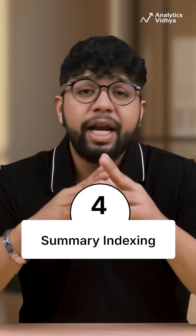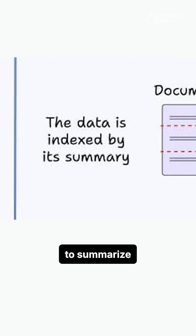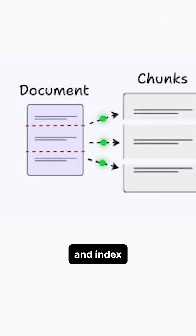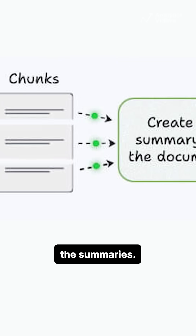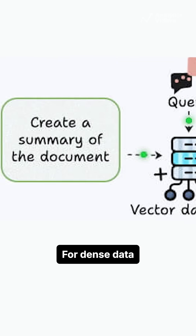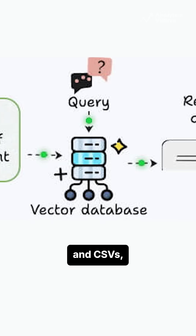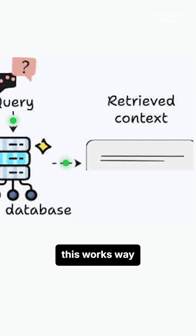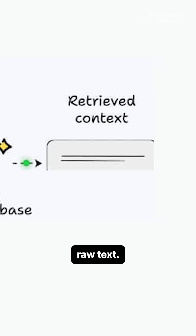Fourth, summary indexing. Use an LLM to summarize each chunk and index the summaries. For dense data like tables and CSVs, this works way better than raw text.